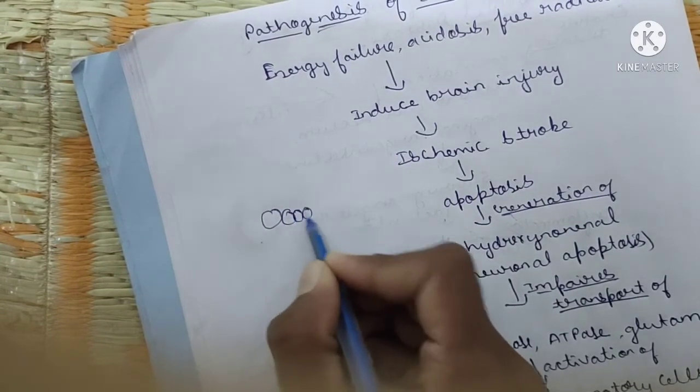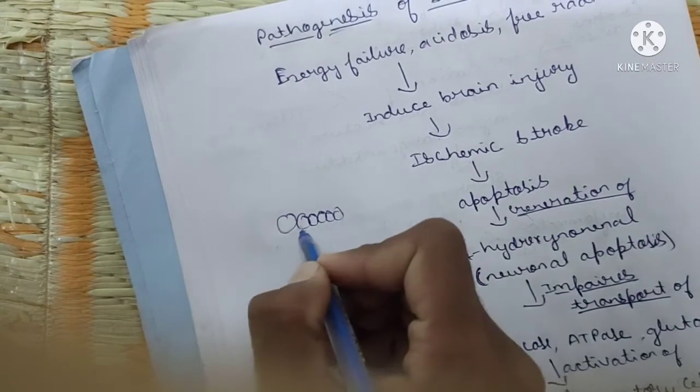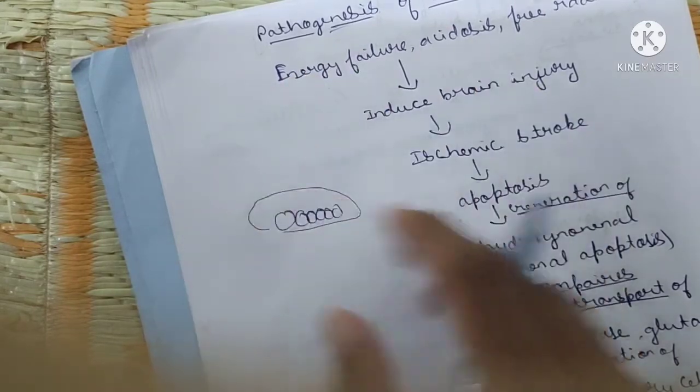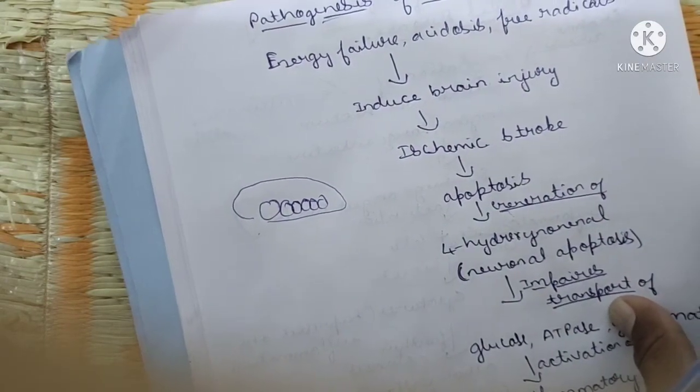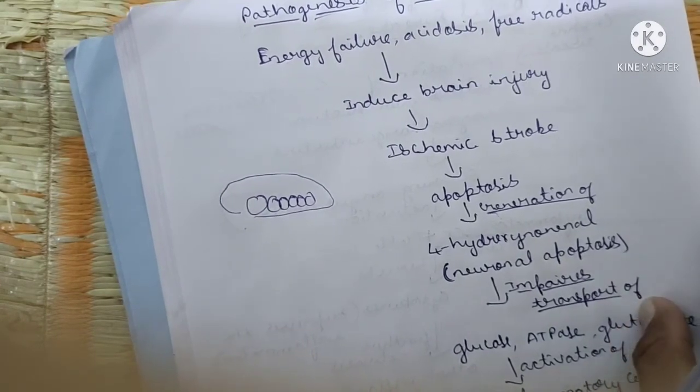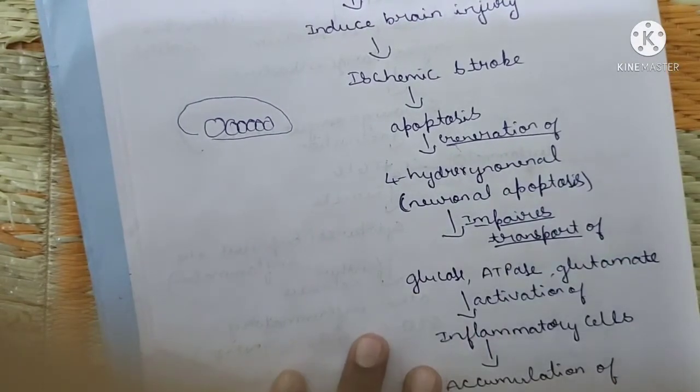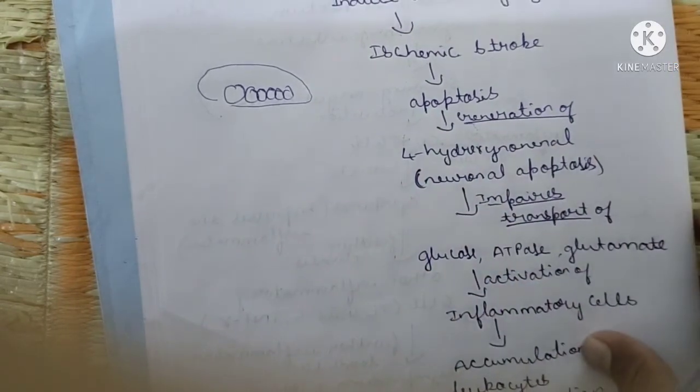Apoptosis is a reversible process. If one cell gets damaged the remaining cells also start damaging. Due to impaired transport of glucose, ATP, and glutamate, inflammatory cells are activated, causing accumulation of leukocytes which activate microglial cells. Microglial cells look after pathogens in the brain and kill them, but this also leads to further inflammation contributing to ischemic stroke.